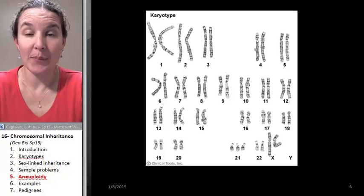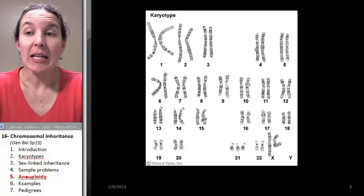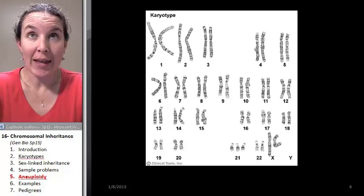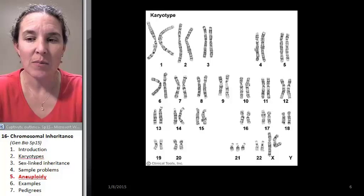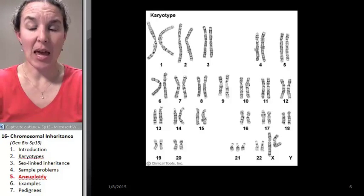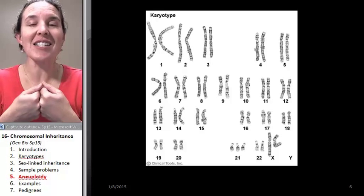Let's talk about aneuploidy. Aneuploidy is a condition that happens when meiosis messes up. When meiosis messes up, it's called nondisjunction.